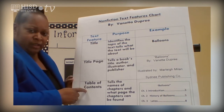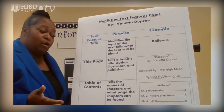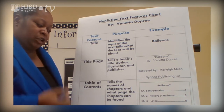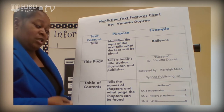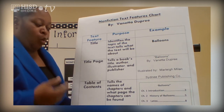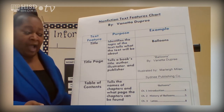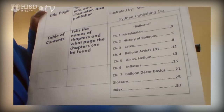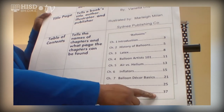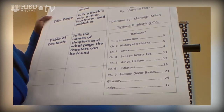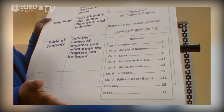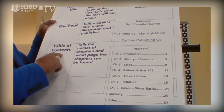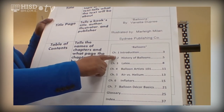The table of contents is so important because it tells the names of the chapters and what page the chapters can be found. If I were doing research, let's say on balloon inflators, I wouldn't have to read everything — I could use my table of contents for a quick search.